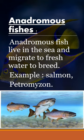Anadromous fishes are the ones who live in the sea and during the breeding season they migrate to fresh water. Examples of anadromous fishes are salmon and petromyzon.